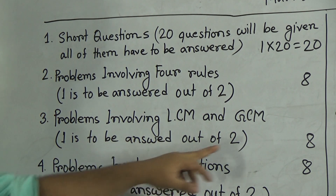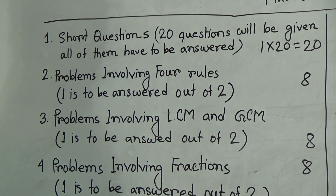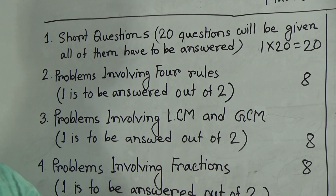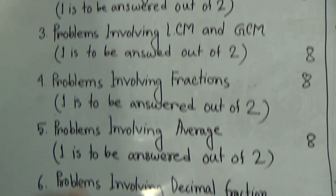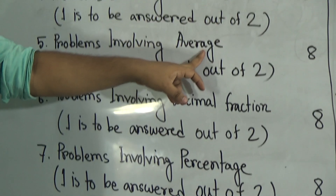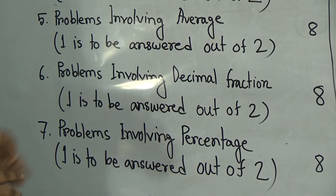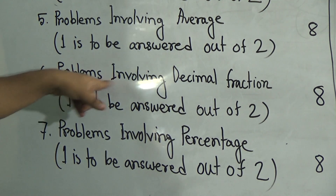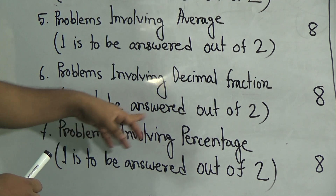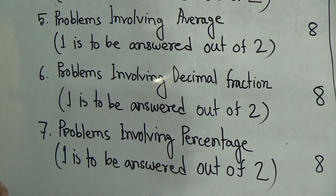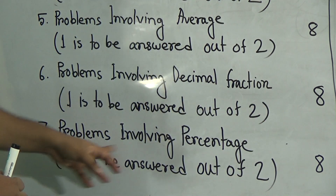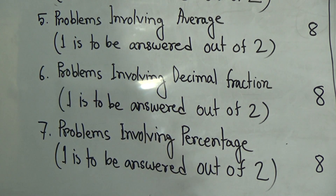Question number 4 is problems involving fractions. You have to answer one question out of two, and this question carries 8 marks. Question number 5 is problems involving average, which is in Chapter 8. You have to answer one question out of two, and this carries 8 marks. Question number 6 is problems involving decimal fractions — one to be answered out of two, carrying 8 marks. Question number 7 is problems involving percentage, from Chapter 9. You have to answer one question out of two, and this carries 8 marks.